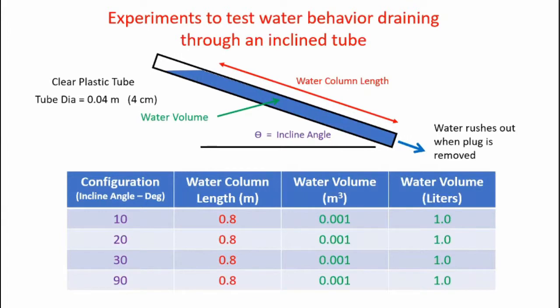Here are the configurations I'll be testing. I'll incline the pipe at 10 degrees, 20 degrees, 30 degrees, and 90 degrees. For each test, the water column length in the pipe will be 0.8 meters, and the water volume contained within the pipe is 1.0 liters in each case.